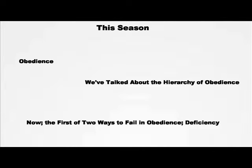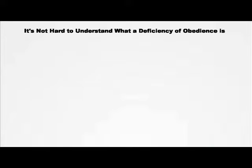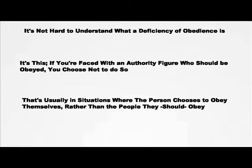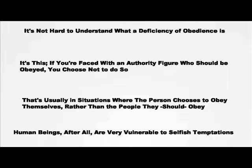One of the two ways to fail in obedience is a deficiency of obedience. This means that when faced with an authority figure who should be obeyed, you decide not to do so. Usually, this takes the form of a person choosing to obey themselves over the people they should really be obeying, as human beings are very vulnerable to selfish temptations.